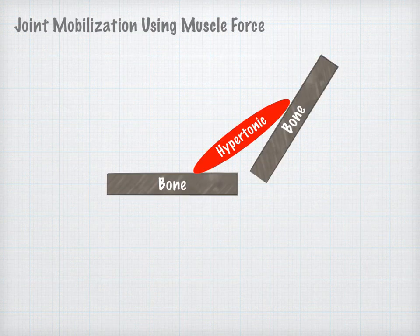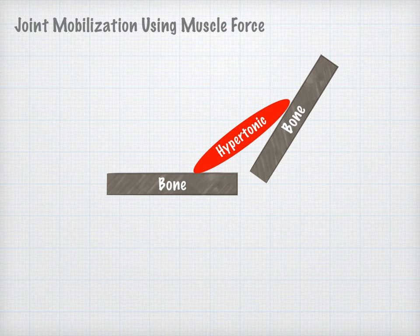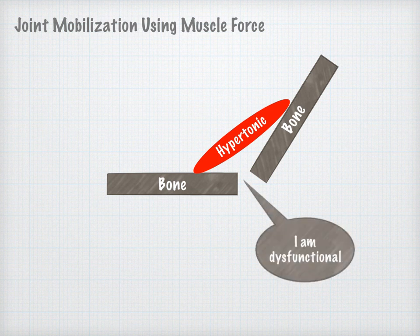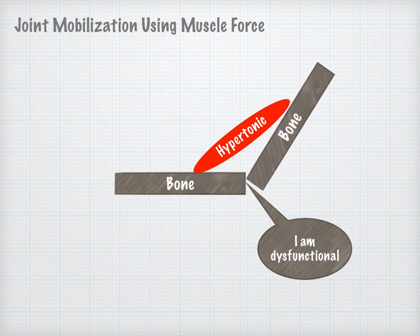The second mechanism is joint mobilization using muscle force. Distortion of articular relationships and motion loss result in reflex hypertonicity of the musculature crossing the dysfunctional joint, which tends to compress the joint surfaces, resulting in thinning of the intervening layer of synovial fluid and adherence of joint surfaces.